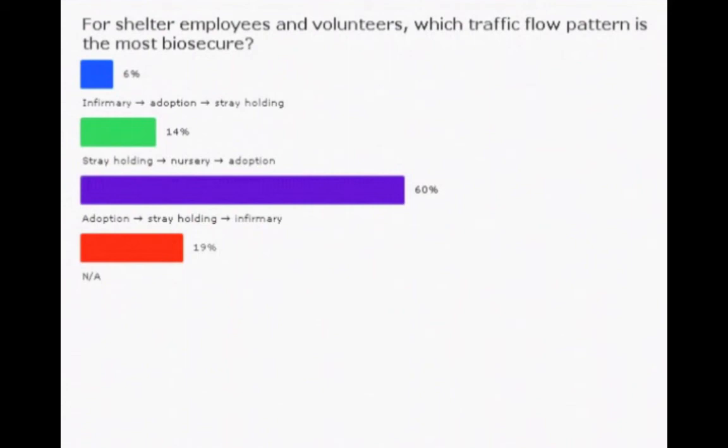Almost everybody got that right. The correct answer was the third choice — moving from adoption to stray holding to infirmary. You want to go from the healthiest animals to the sickest animals. Adoption should be healthy animals ready to go out to the public. Stray holding should also be healthy animals, but you don't know if they've been exposed to something, so they come after adoptable animals. And then the infirmary is for animals that you know are sick and undergoing medical treatment.